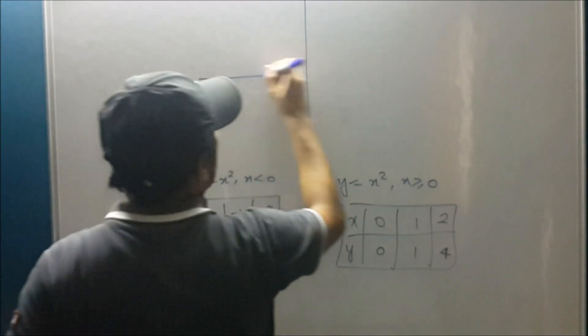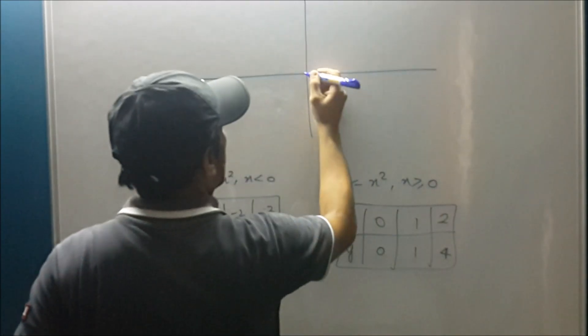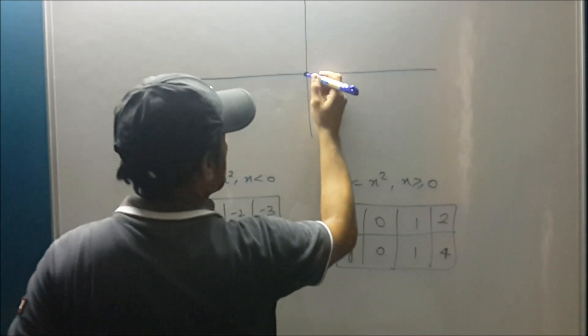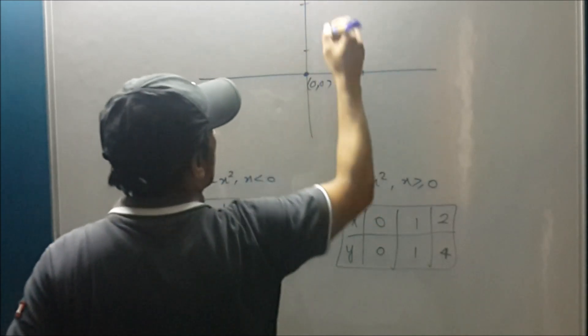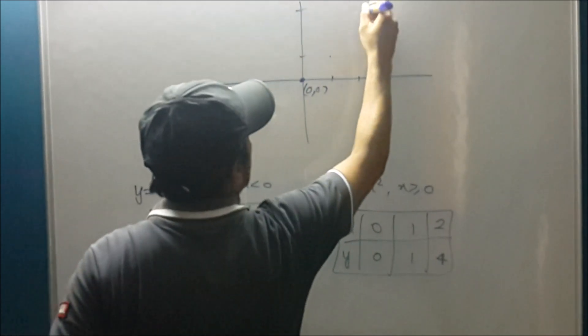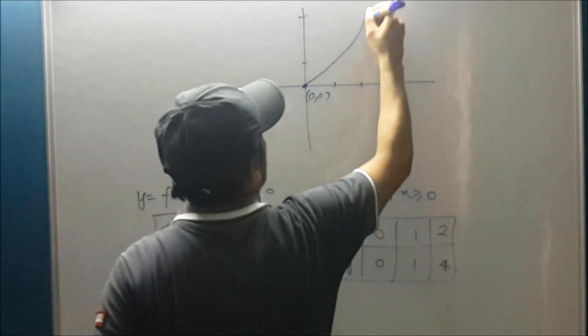So I am now taking non-negative values starting with zero here and zero. When we put zero the answer is zero comma zero. When we put one it is one. When we put two it turns to four. So the graph is something like this. So it is the upward parabola.